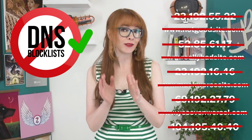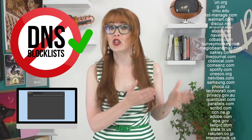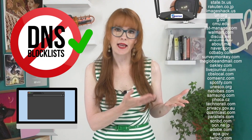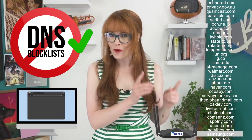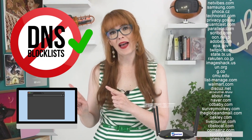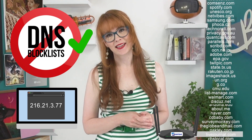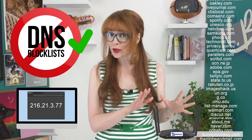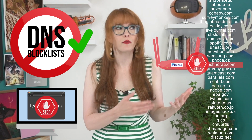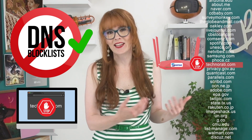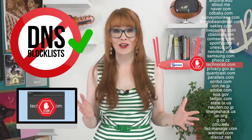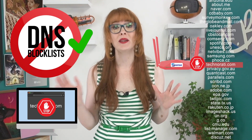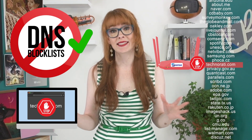When you have blocklists enabled, the DNS resolver will first check to see if the site you want to visit is on a blocklist before sending you back an IP address. If it is on a blocklist, the DNS resolver will refuse to send you its IP address, which blocks any connection from happening between you and this site.